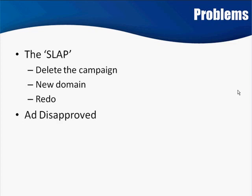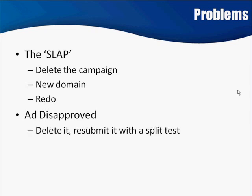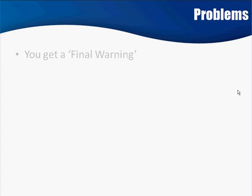What if your ad has been disapproved? This is usually fairly easy — randomly ads get evaluated by a human being, and if that happens, just go in, delete the ad, and resubmit it with a split test variation. A lot of times that in and of itself will fly. Also, move your keywords into the display URL.